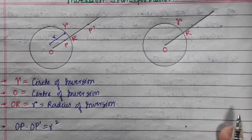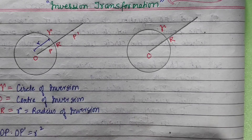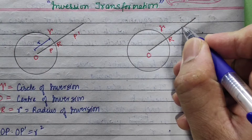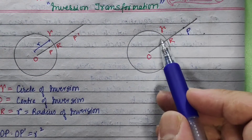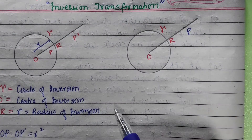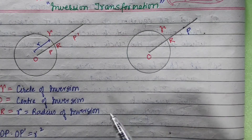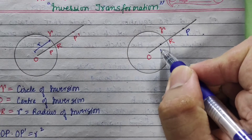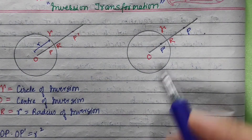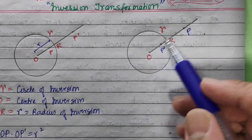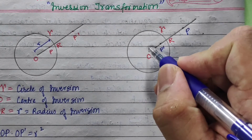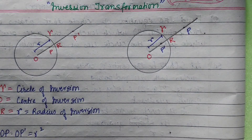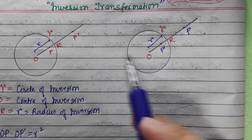Suppose this object is on the outside. The image will be in the interior of the circle of inversion, and this is the center of the object point. The image will fall within the square of the radius. This is the inverse transformation.